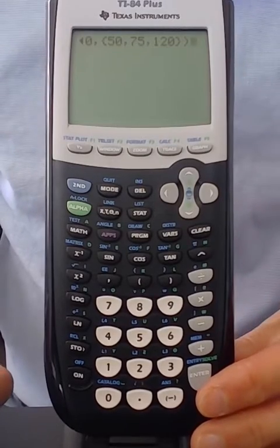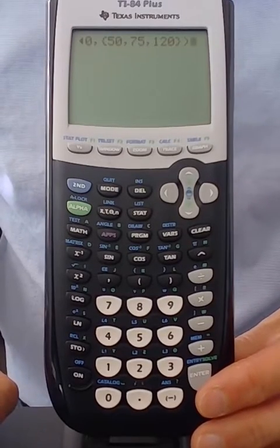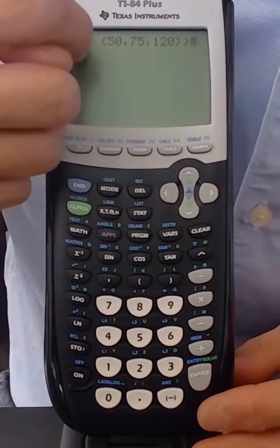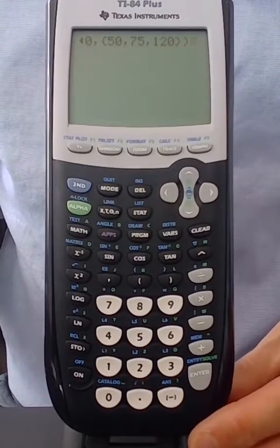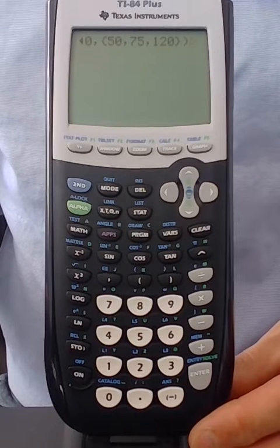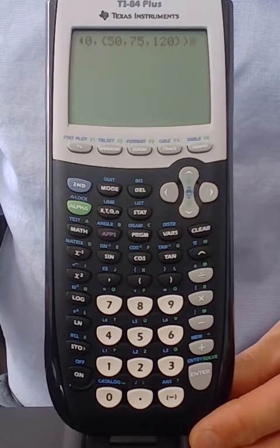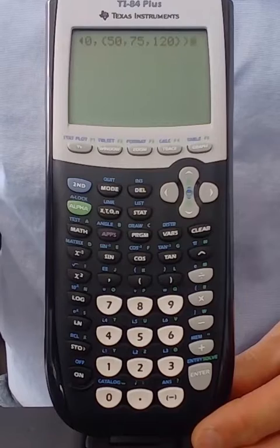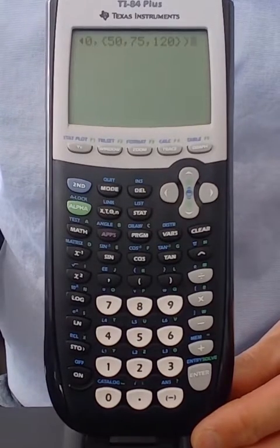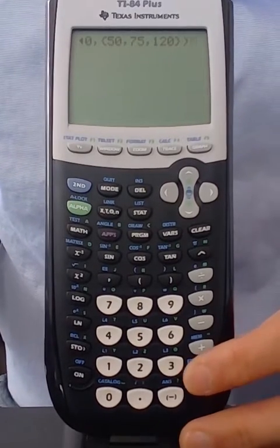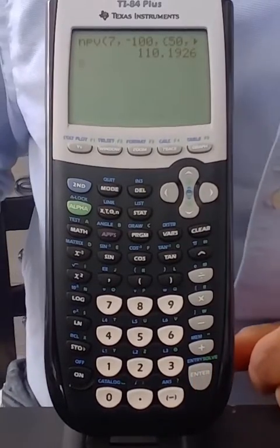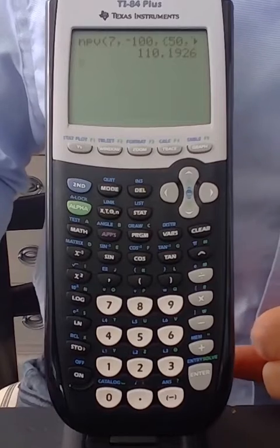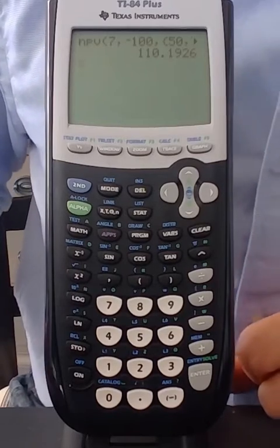Before I hit enter I want you to notice a very common mistake is to leave out the comma there between the period zero cash flow and the bracket. So make sure you realize there is a comma between the period zero cash flow and the bracket before the first cash flow and then we press enter and we see the answer to the net present value of this stream of cash flows is 110 dollars and 19 cents.